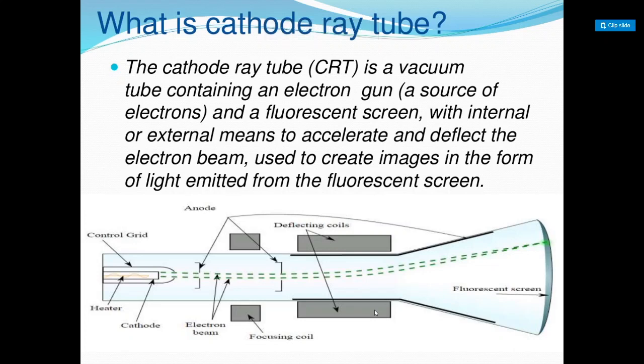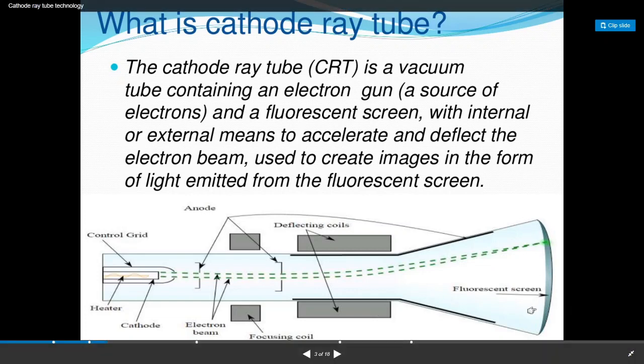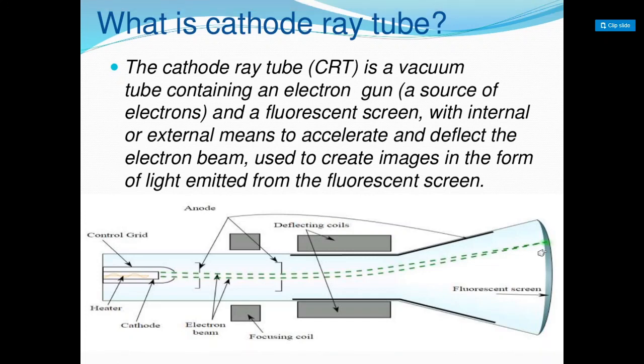In this video, let us see how a CRT monitor works. A CRT is a cathode ray tube. The cathode ray tube is a vacuum tube containing an electron gun, which is a source of electrons, and a fluorescent screen, with internal or external means to accelerate and deflect the electron beam, used to create images in the form of light emitted from the fluorescent screen.